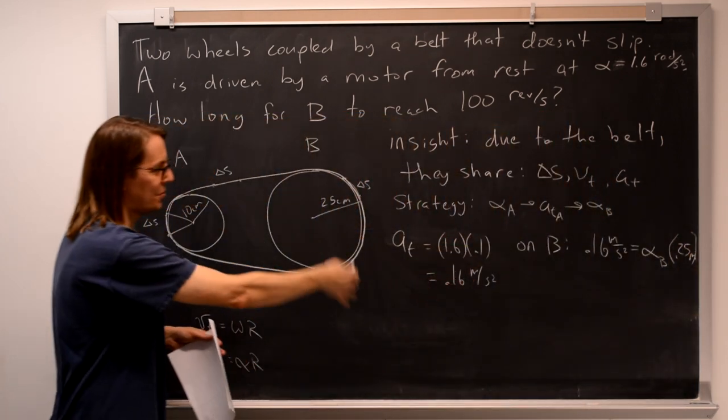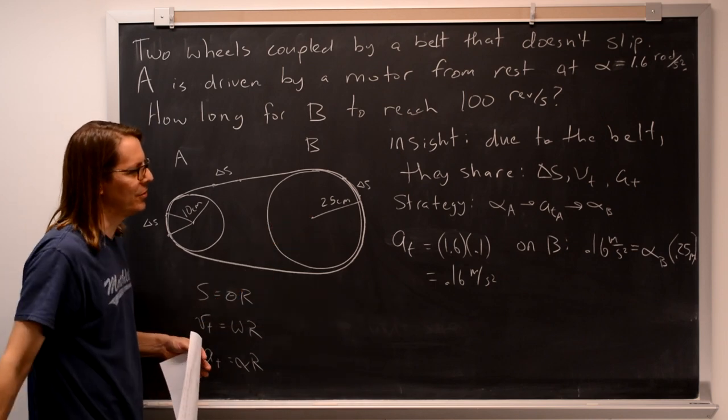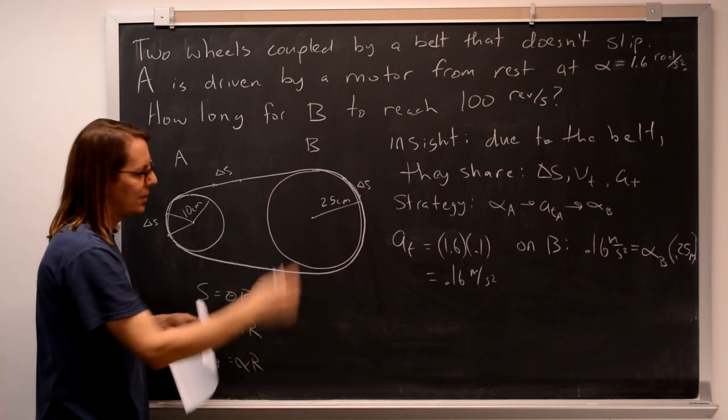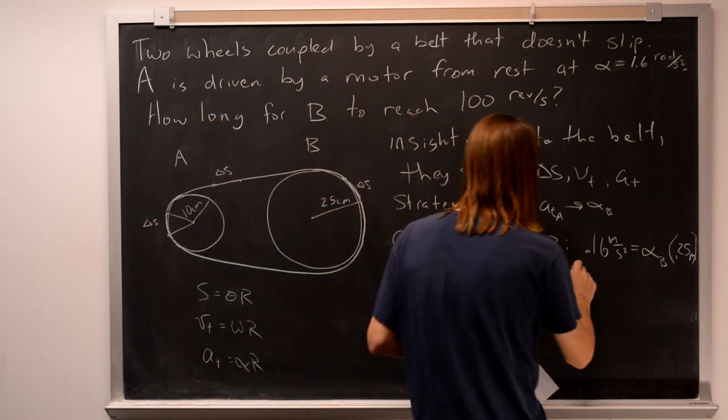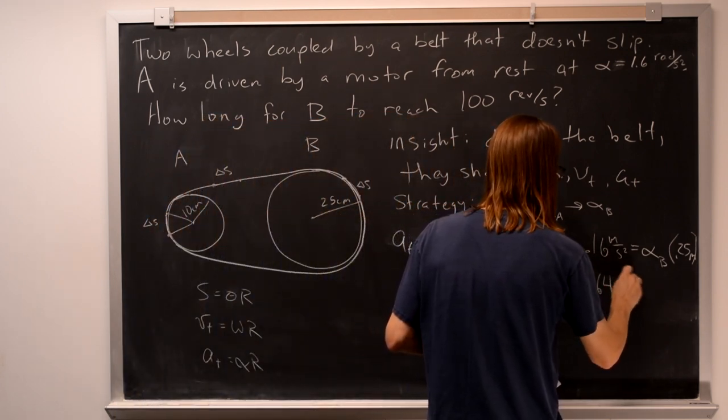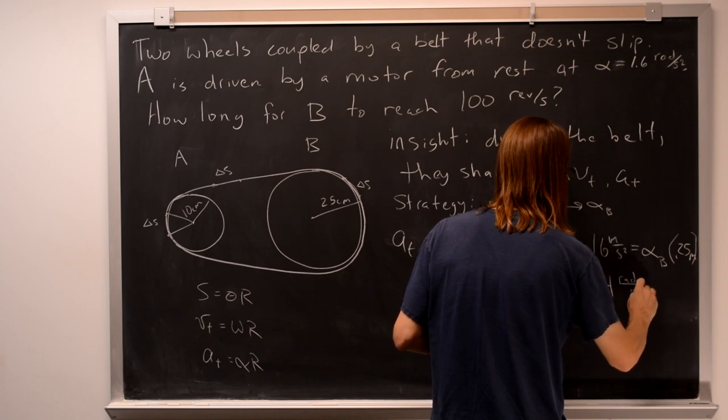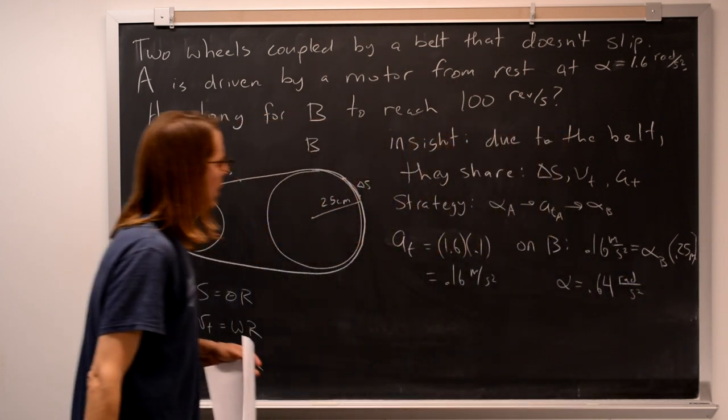We say the 0.16 meters per second squared is the angular acceleration of B times 0.25 meters in that radius. So you can see we're really just doing a ratio, ratioing the 10 centimeters and the 25 centimeters. We solve that for alpha B, and you get 0.64 radians per second squared.